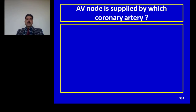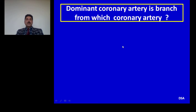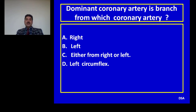Question 3: AV node is supplied by which coronary artery? Options: right, left, left circumflex, left anterior descending. Answer: AV node is supplied by the right coronary artery, given just proximal to its terminal branch — the posterior interventricular artery — in case of right dominance. Question 4: The dominant coronary artery is a branch from which coronary artery? Options: right, left, either right or left, left circumflex. Answer: This vessel can be branched from the right in case of right dominance, from the left in case of left dominance, or from both in case of co-dominance. Right dominance is seen in 85% of cases, left dominance in 8%, and co-dominance in 7%.